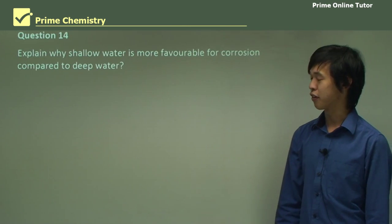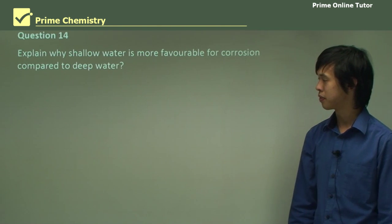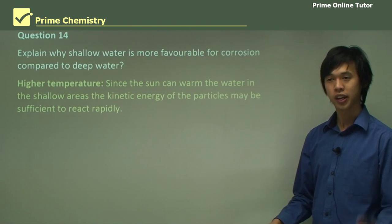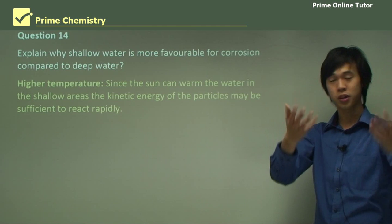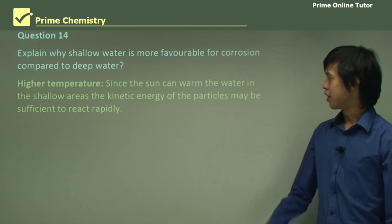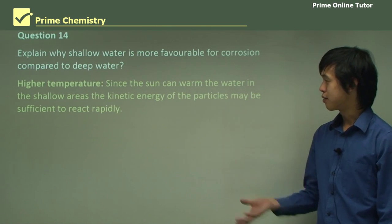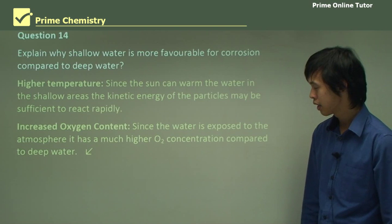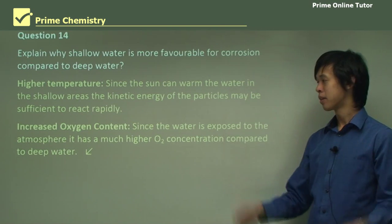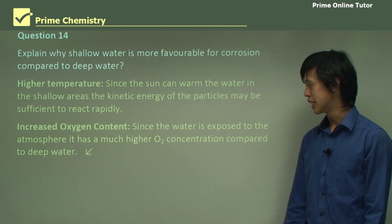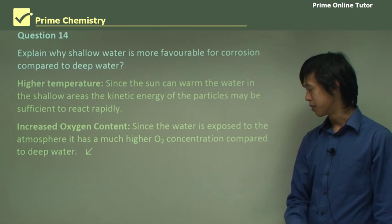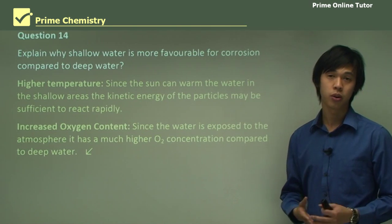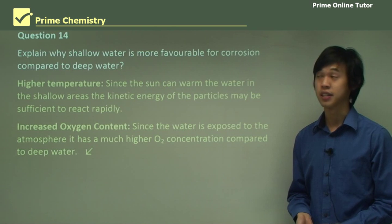Explain why shallow water is more favourable for corrosion compared to deep water. You've got a higher temperature. Since the sun can warm the water in the shallow areas, or more importantly, it will warm the ocean floor, which will then warm the water. Then the water in the shallow areas, the kinetic energy of the particles may be sufficient to react rapidly. So we could have enough energy to actually react. And because it's in contact with the air, there's an increased oxygen content. So there will be a much higher O2 concentration compared to deep water. So those are the two reasons why shallow water is more favourable for corrosion than deep water.